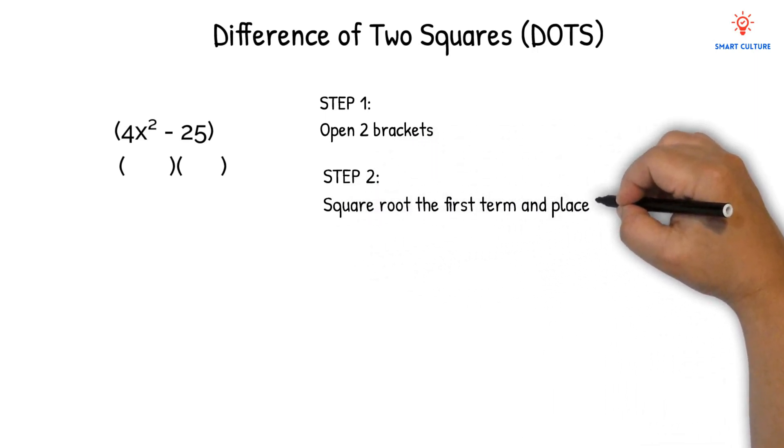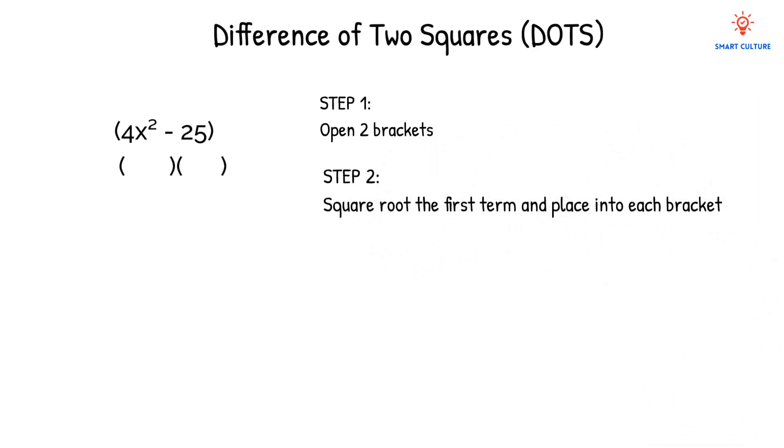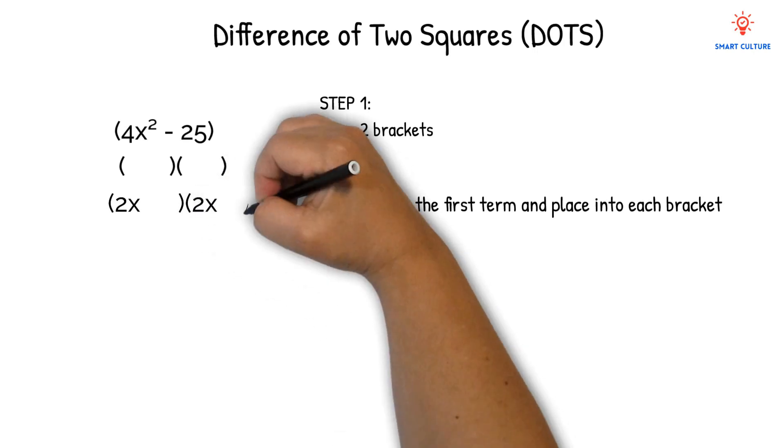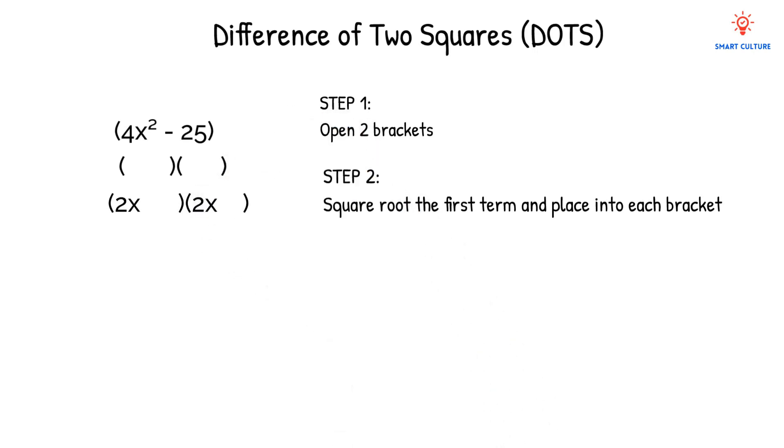Square root the first term. The square root of 4x squared is 2x. Let's place 2x in each of the brackets. Step 3: